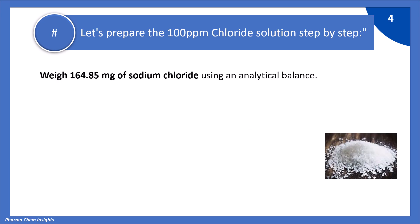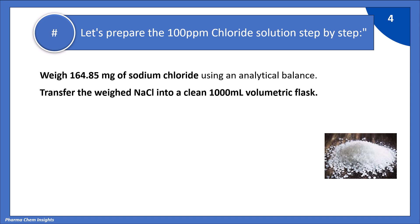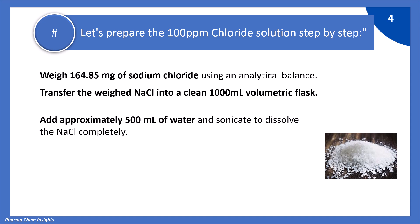Let's prepare the 100 ppm chloride solution step by step. Weigh accurately 164.85 mg of sodium chloride using an analytical balance. Transfer the weighed NaCl into a clean 1000 ml volumetric flask. Add approximately 500 ml of water and sonicate to dissolve the NaCl completely.